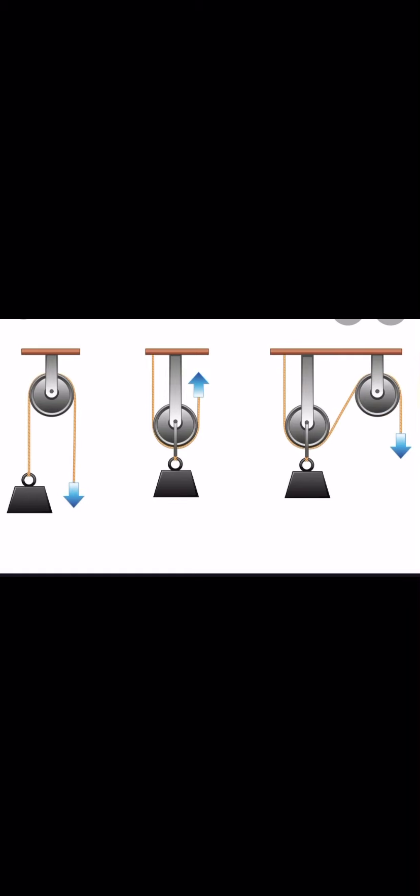First of all, we have to define each one. This is a pulley. A pulley is made of a grooved wheel with a rope or chain that moves around it. The pulley can be three types.